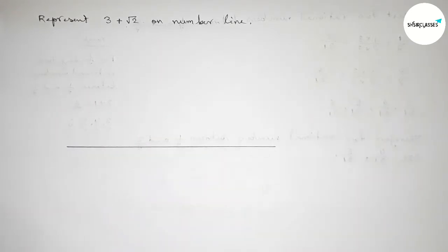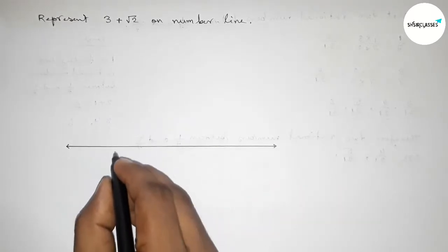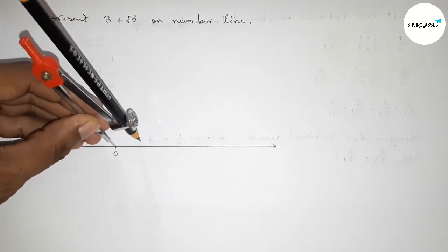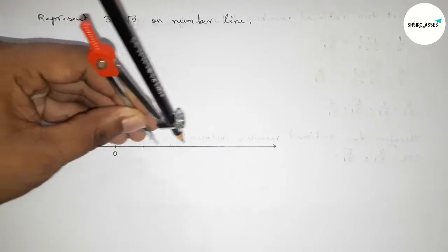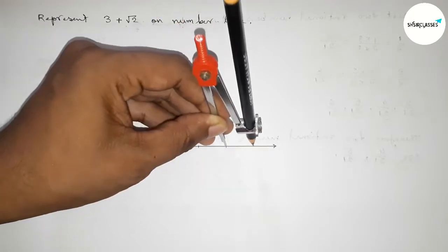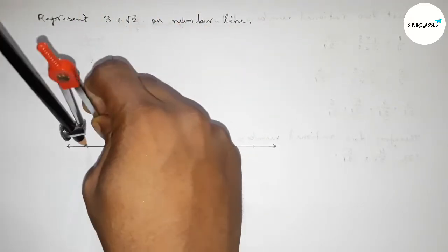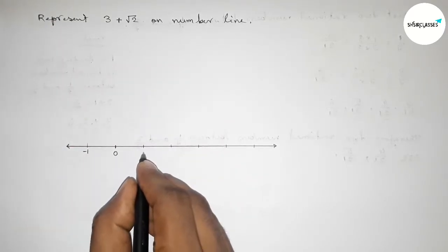First, draw a line of any length and take arrow marks on both sides. Now take number 0 here, next use the compass, take any length, and mark the numbers on the line. The length of the compass is one unit length.